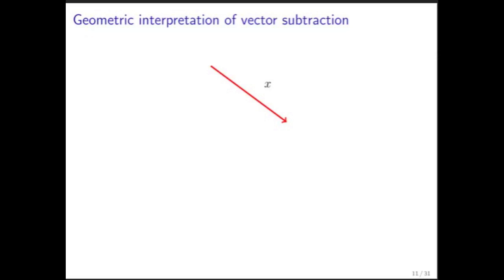If instead we start with the vector x and we have a vector y, then taking the negative of that vector y means pointing it in the opposite direction. Now we have two vectors x and minus y that are head to toe. So x plus minus y is now the vector that's right there.